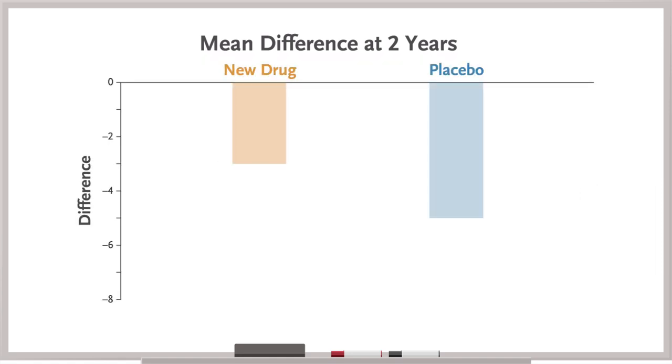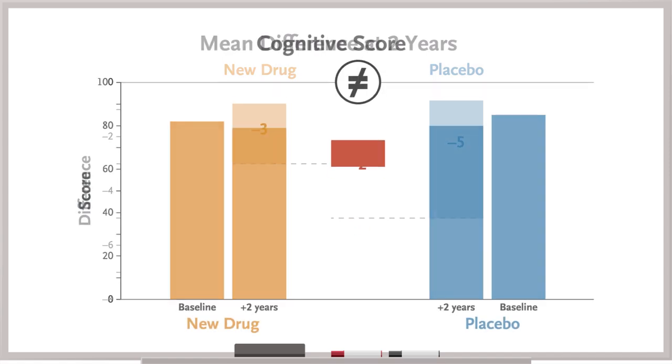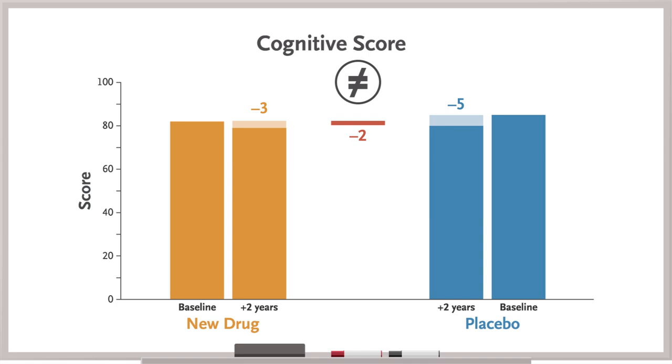When the results come in, patients in the new drug arm had a mean change of minus 3 points, compared with a change of minus 5 points for patients in the placebo arm. This difference is statistically significant, but you think it seems unlikely that a 2 point difference on this 100 point scale will be noticed by the person or their loved ones.